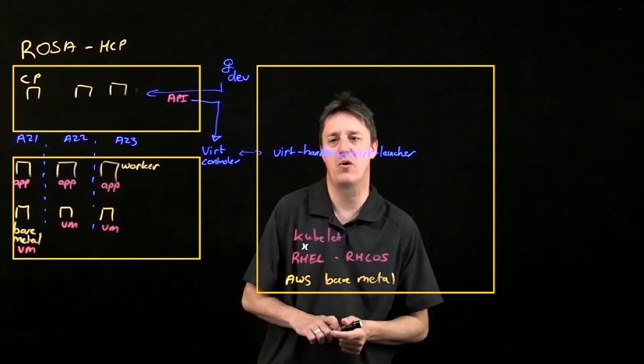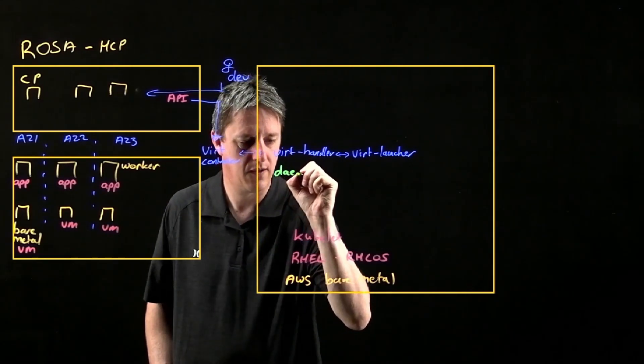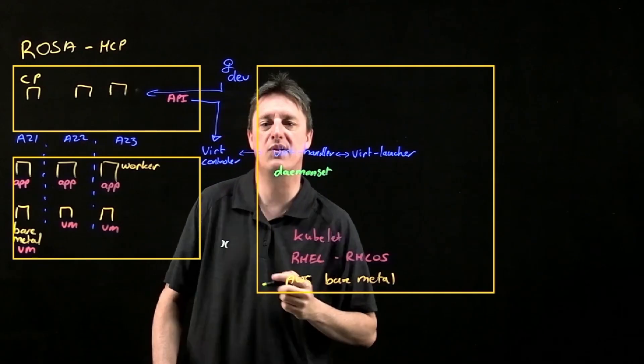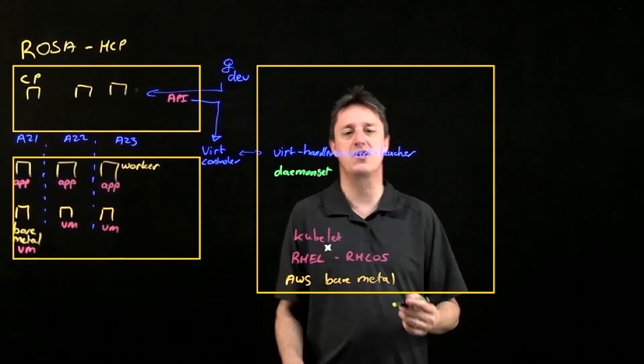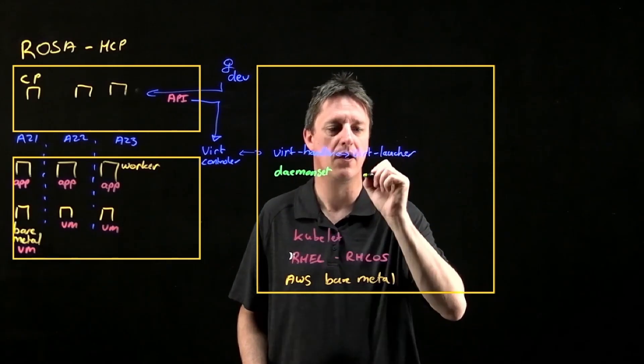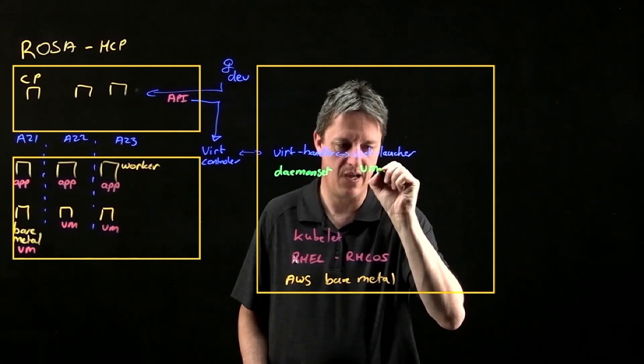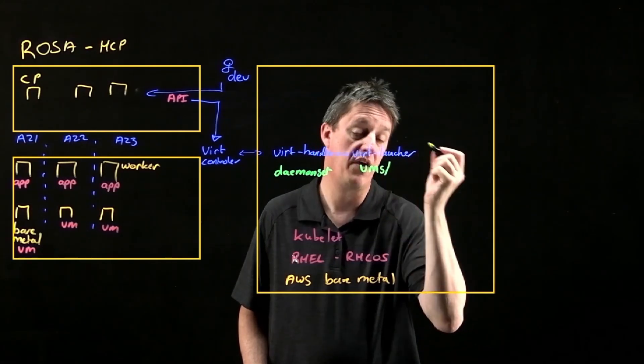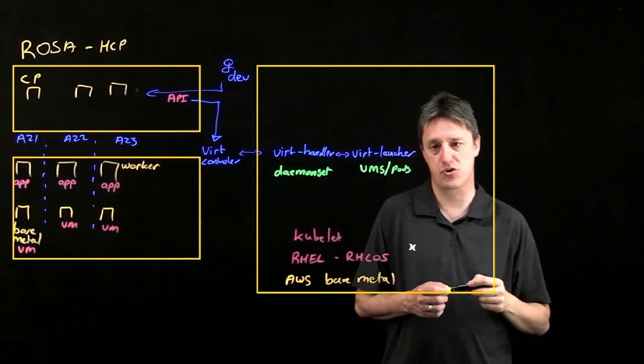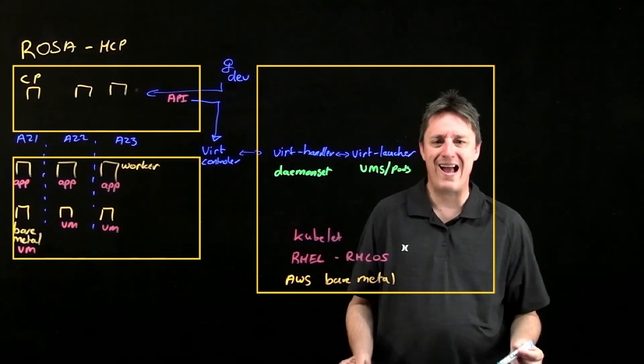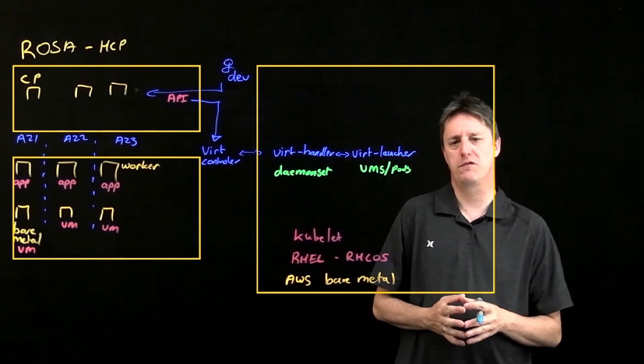Let's zoom in for some of the components underneath. The virtualization handler is essentially a demon set running inside my node that facilitates working with virtual machines. My virtual machine launcher is responsible for the actual launching placement of the actual VMs or the actual underlying Kubernetes pods that facilitate my virtual machines. These are all going to run as containerized workloads inside my OpenShift environment.